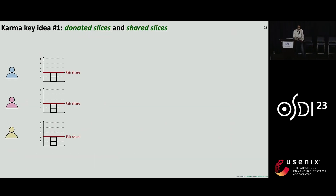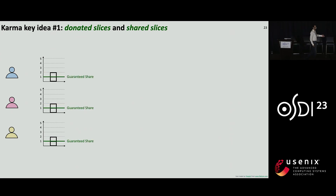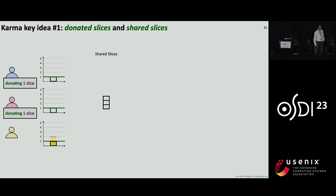Let's dive into the Karma algorithm. Recall that with maximum fairness, there's a key constraint guaranteeing every user its fair share at any point of time — this significantly limits the ability to balance resources across users over time. Karma instead guarantees each user a fraction of its fair share; for now, let's assume that fraction is half. The slices not guaranteed to any user are called shared slices, and these are used by the algorithm to balance resource allocation over time. At any given point of time, users may or may not use their guaranteed shares. In this example, the blue and pink users have zero demand and are not using their guaranteed slices, so they donate them — one slice each. The yellow user has demand greater than its guaranteed share and wants to borrow one extra slice, which can be allocated from either the donated or shared slices.